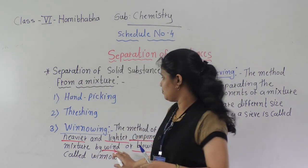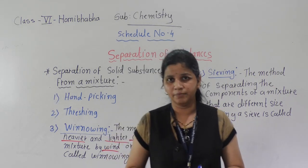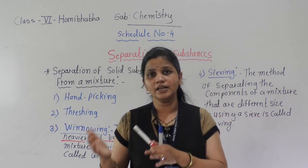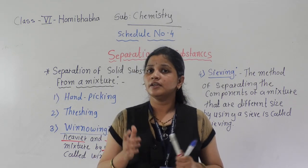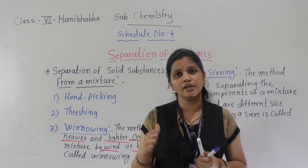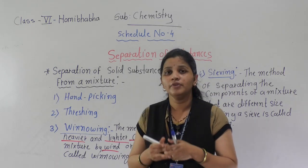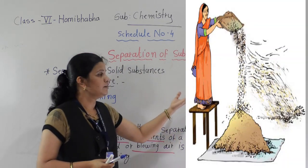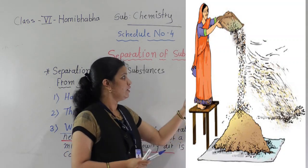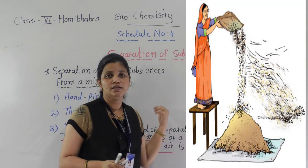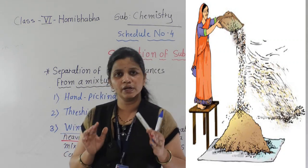Do you remember something? This method is mostly used by farmers — the winnowing method. For example, when they separate grains and husks — grains may be rice and wheat, and you know what husk is. Which is lighter: grains or husks? Grains are heavier than the husks, and husks are the lighter parts. So these can be separated with the help of this method. Here, a picture is shown of winnowing — how to separate the husk from grain using this method. So do you understand the winnowing method? Mostly in your home also, sometimes your mother uses it to separate things. This is a very simple method to separate heavier and lighter particles.